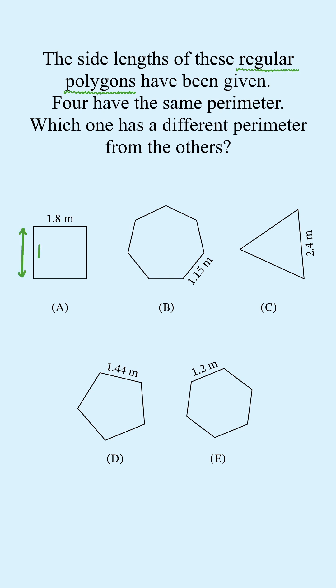In a regular polygon, all sides are the same length. The perimeter is the number of sides multiplied by the side length.